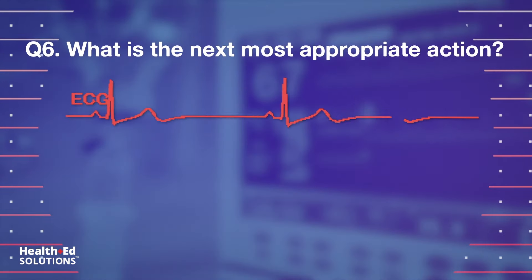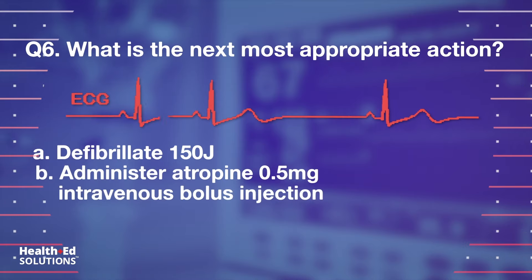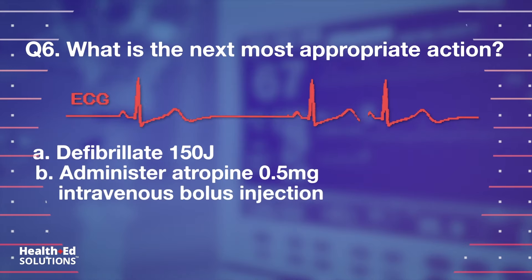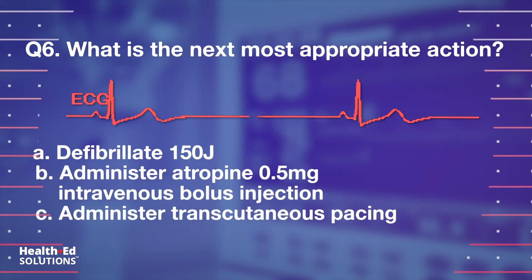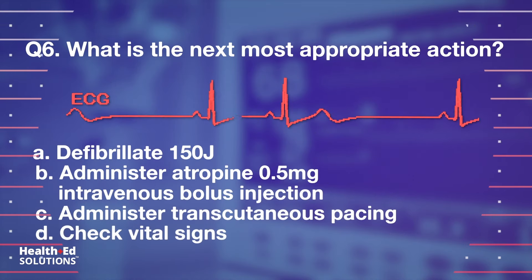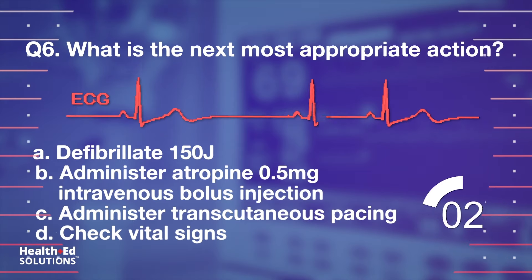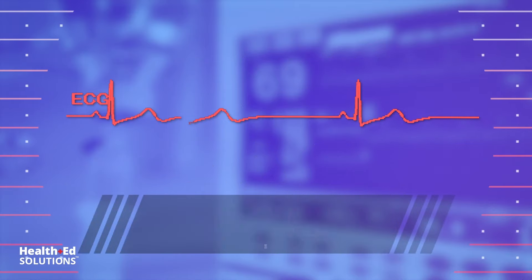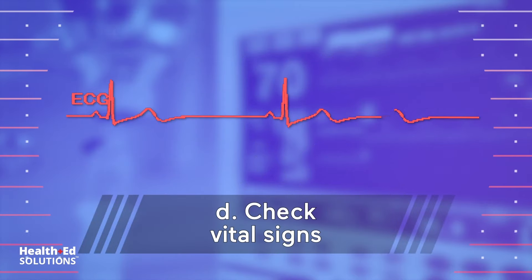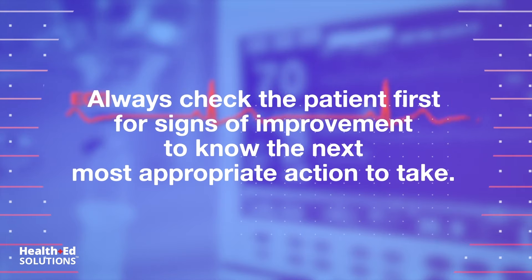Question 6: What is the next most appropriate action? A. Defibrillate 150 joules. B. Administer atropine, 0.5 mg intravenous bolus injection. C. Administer transcutaneous pacing. D. Check vital signs. Correct answer D: Check vital signs. Always check the patient first for signs of improvement to know the next most appropriate action to take.